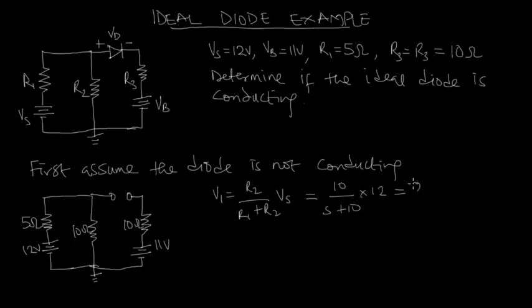Then applying KVL on the right-hand mesh, we have that V1 will be equal to Vd plus Vb, where Vd will be equal to V1 minus Vb which is 8 minus 11 and that gives minus 3 volts.